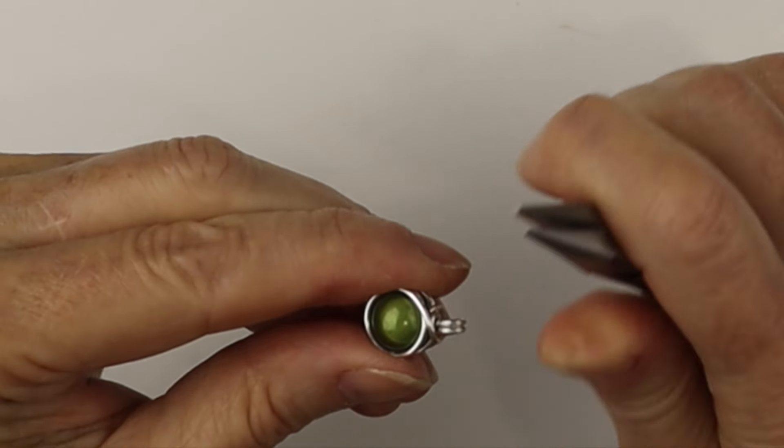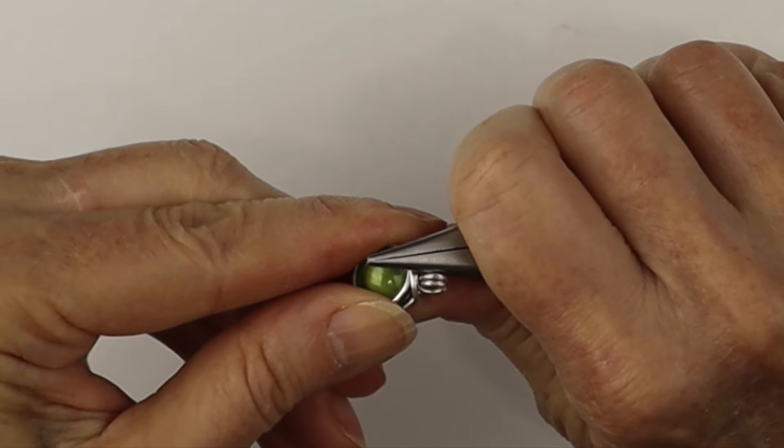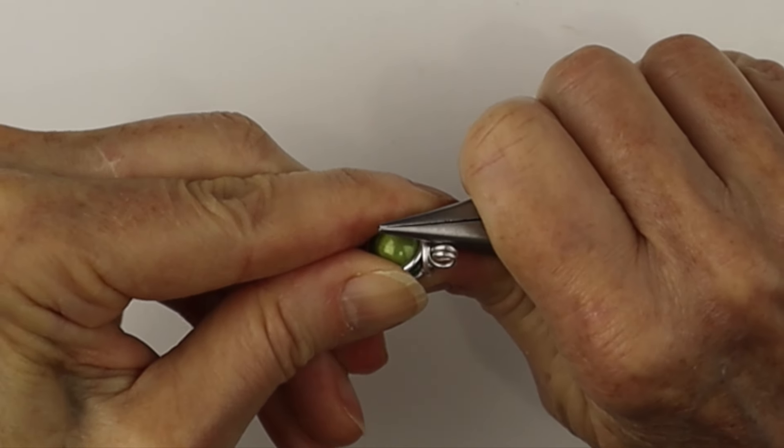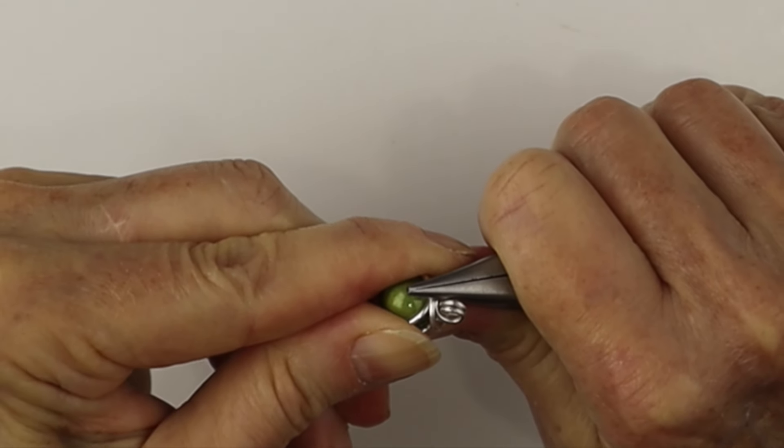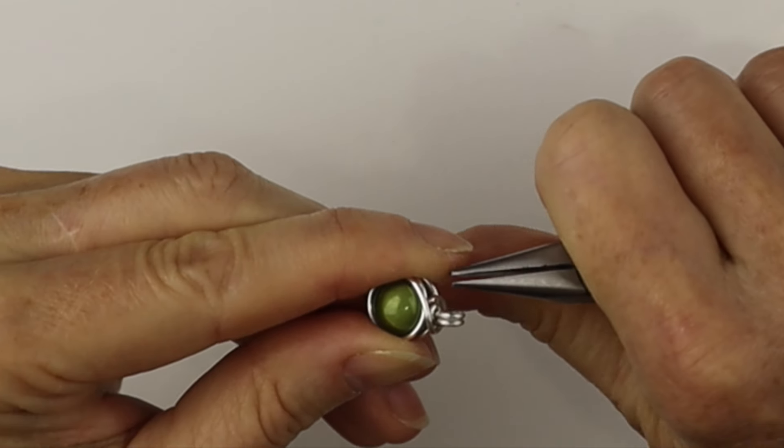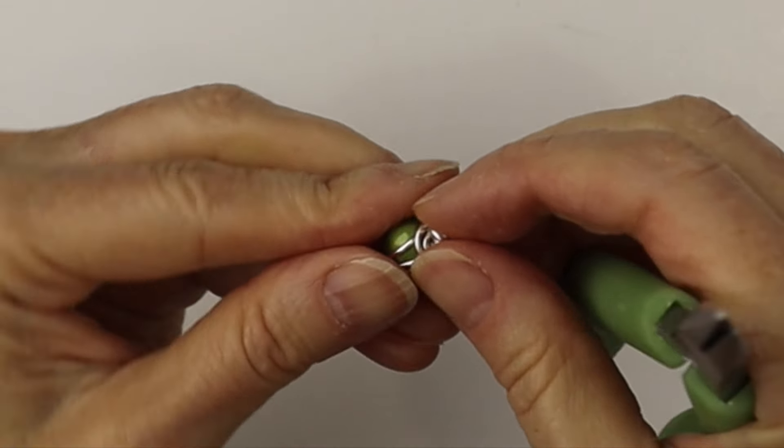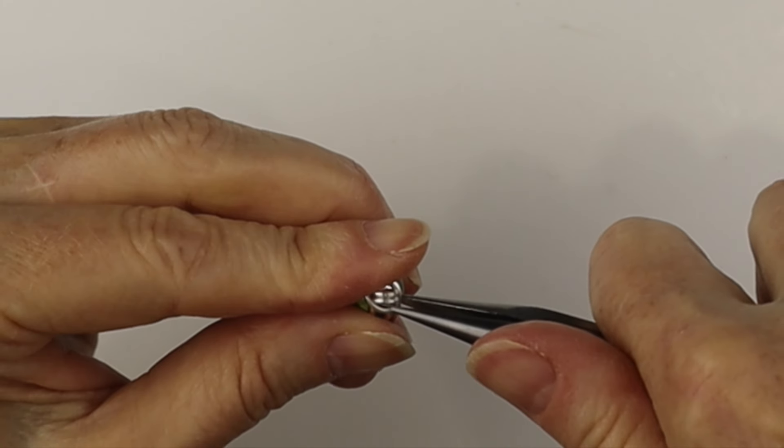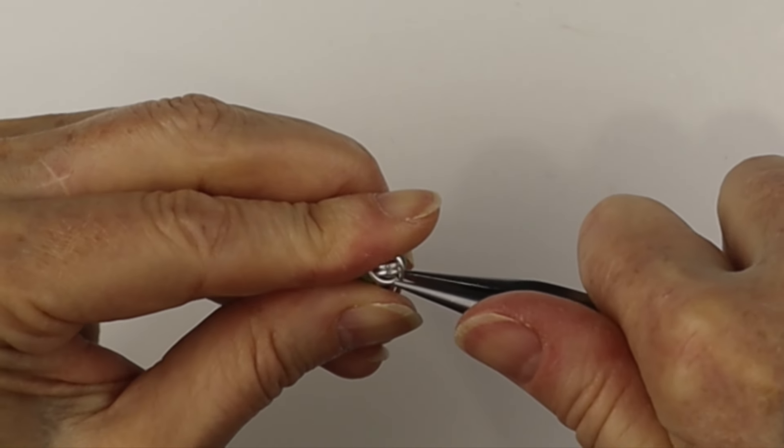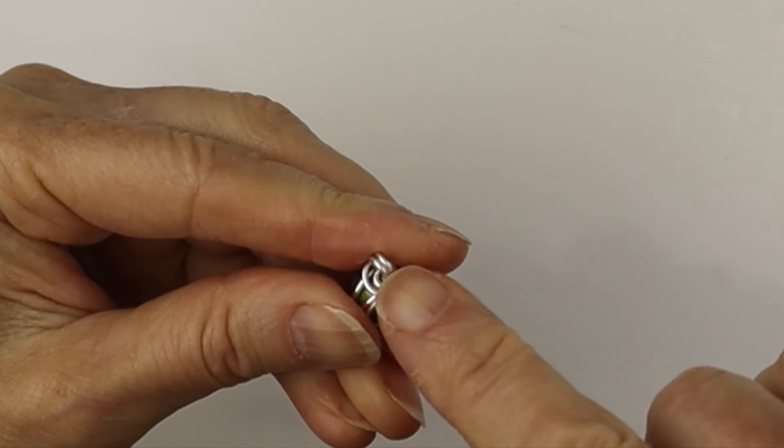Once that end is clipped, we're just going to push it down with the chain nose pliers so it's flush with the wire and you can't see that end. Don't want any little pokey ends. You could also just pinch it in with the end of the pliers as well.